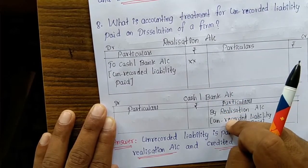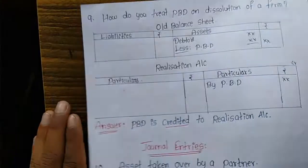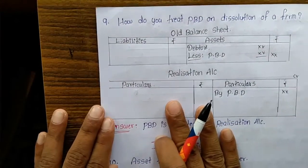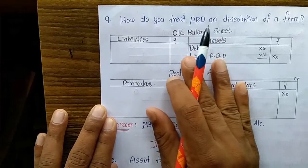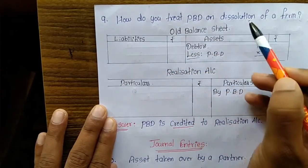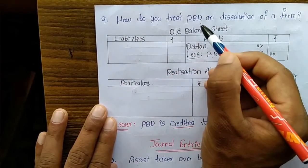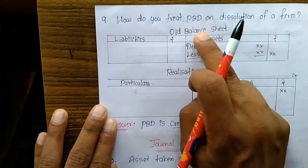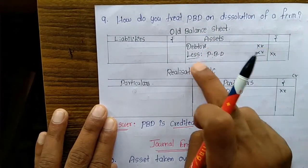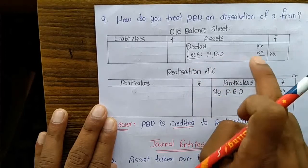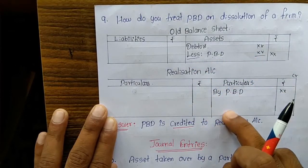Next question: how do you treat Provision for Bad Debts (PBD) on dissolution of a firm? The balance of PBD is credited, and the asset value is reduced by the PBD amount. The accounting treatment for PBD is followed accordingly.